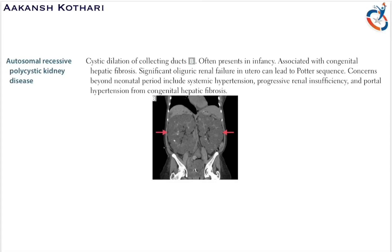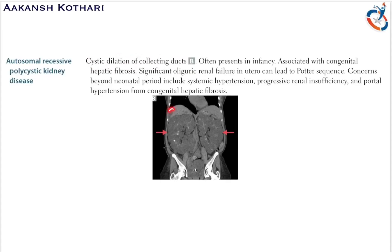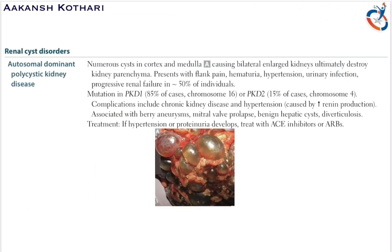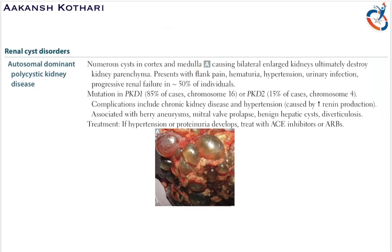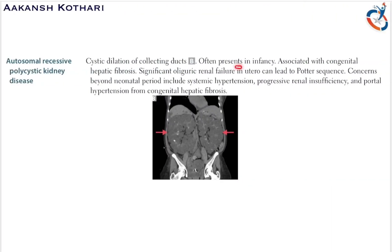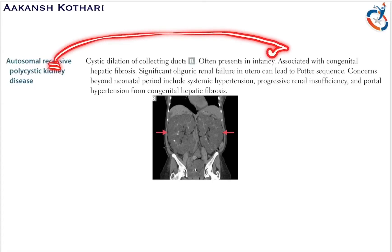The autosomal recessive form is seen as cystic dilatation of the collecting tubules. It is present in infancy, whereas autosomal dominant polycystic kidney disease is present in early adolescence. Autosomal recessive PKD is often presented in infancy and is associated with congenital hepatic fibrosis.